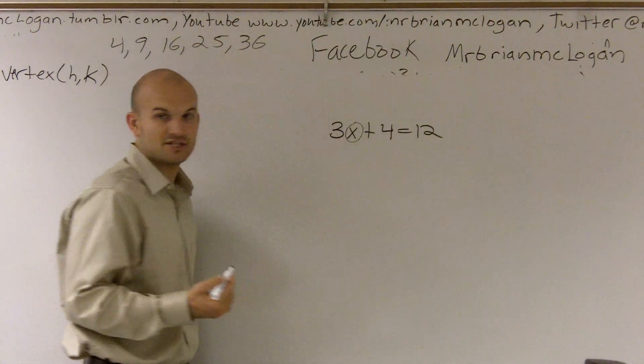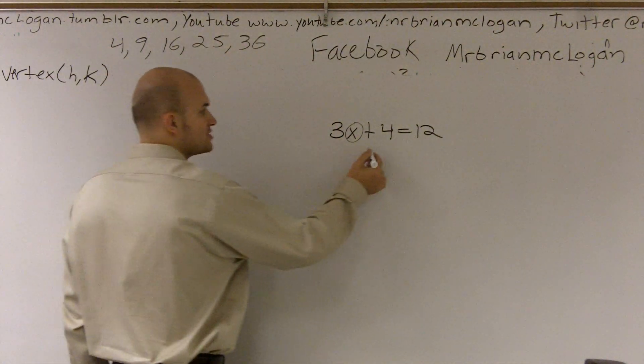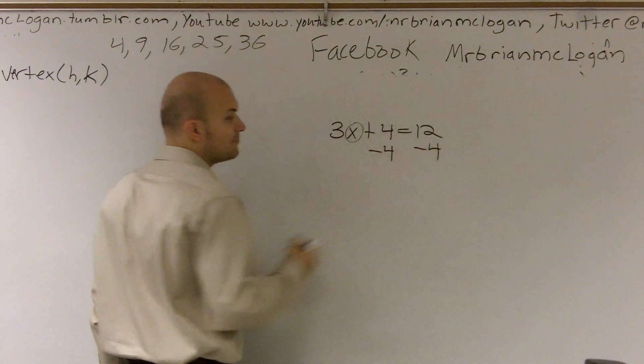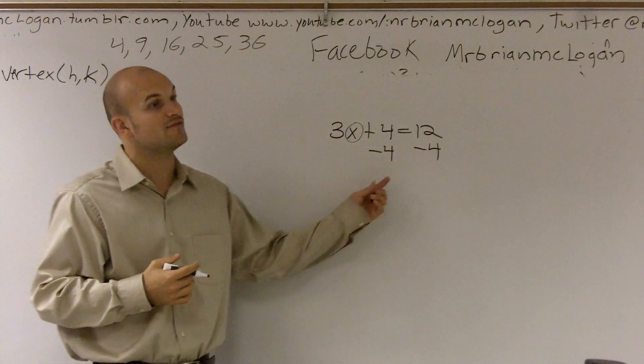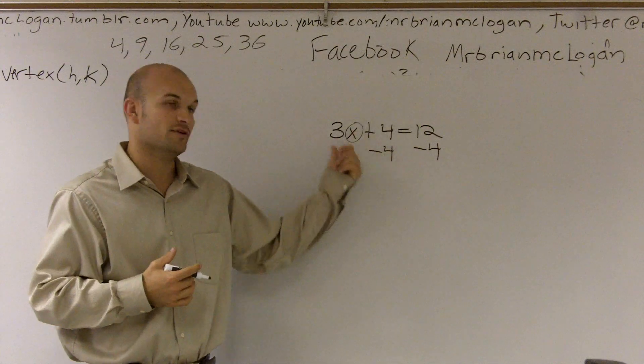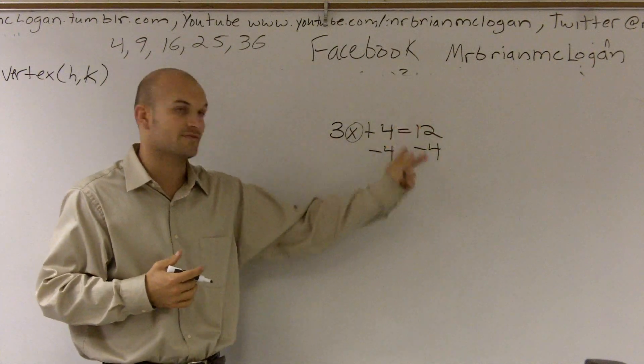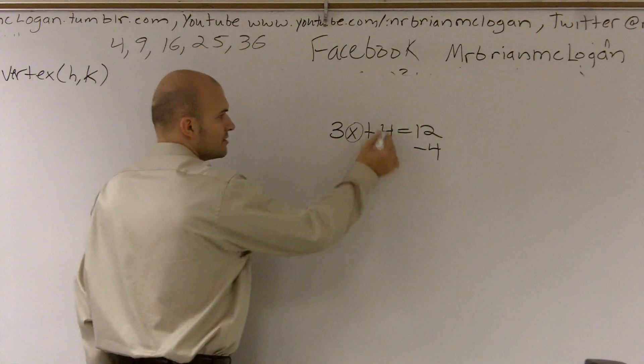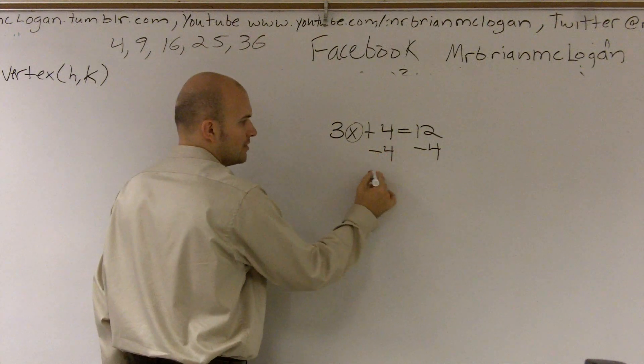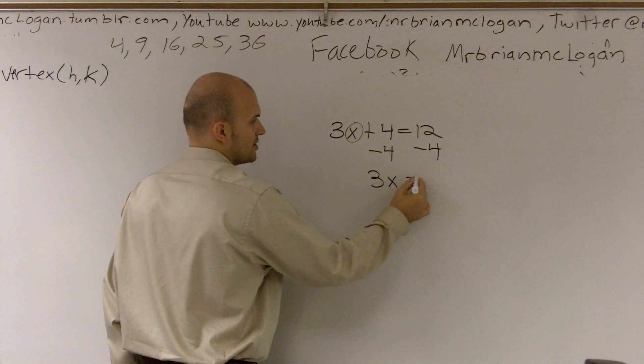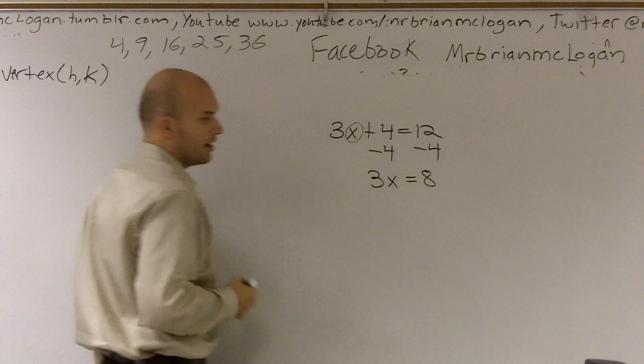To undo addition, we have to use the inverse operation, which is subtraction. Now, you need to make sure you subtract on both sides, because that's the property of equality. Whatever you do on one side, you have to do on the other side. Therefore, 4 minus 4 gives you 0. We don't need to write 3x plus 0.